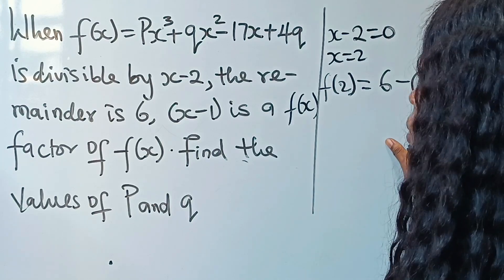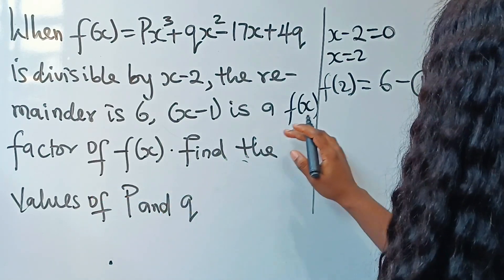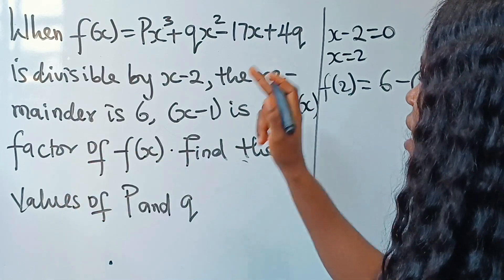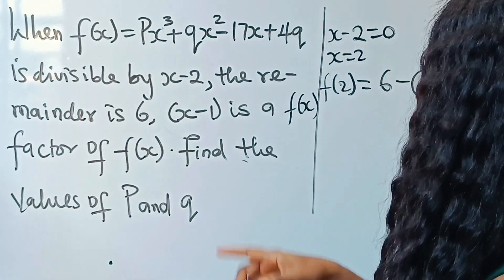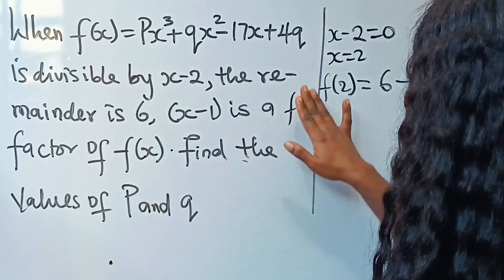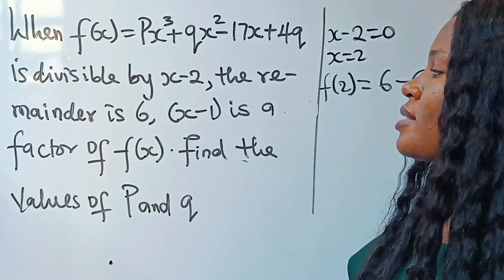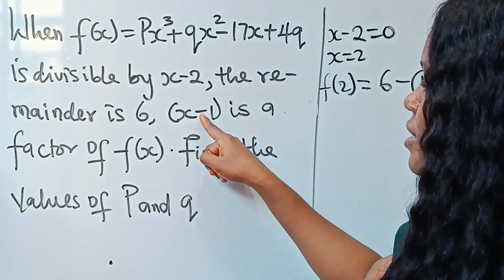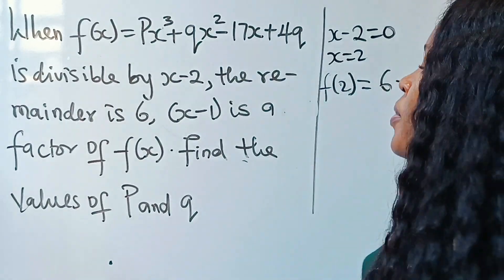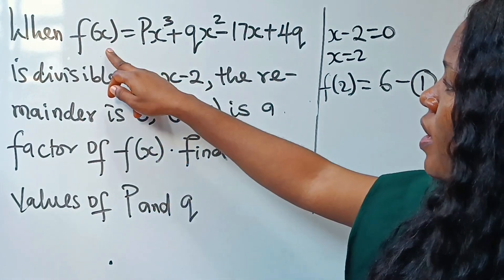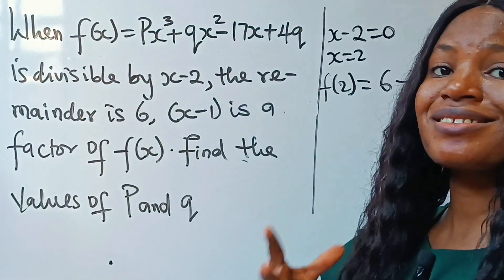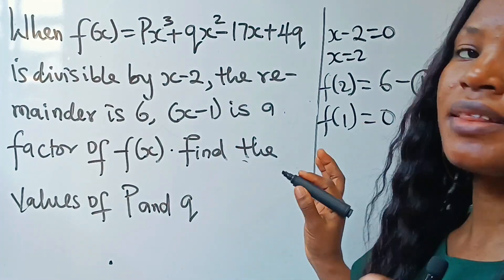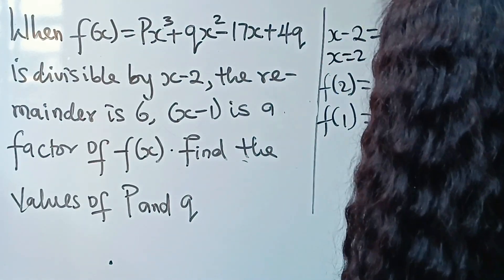For the second condition, we are told that x minus one is a factor of f(x). Since x minus one is a factor, the root is x equals one — the opposite of negative one. When you substitute one into f(x) you get zero. So f(1) equals zero. These are the two things we needed, and now we are asked to solve for p and q.